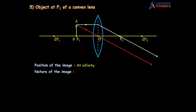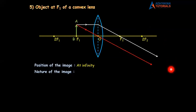Let us discuss the nature of the image. Look at this diagram and tell us — are the rays actually meeting or appearing to meet? Now some children will say they are actually meeting, some will say they are appearing to meet, some say they are not meeting at all. So we will not decide real and virtual now. We will go for the second nature. Rays are going down, so the image, wherever you get it, will always be below the principal axis. The image will be inverted.